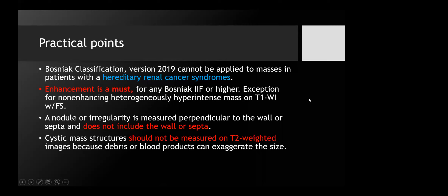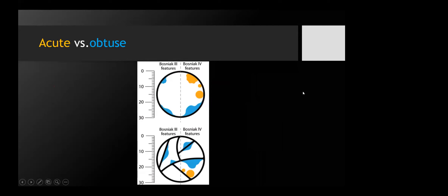Cystic mass structures should not be measured on T2; all measurements should be taken from post-contrast images, because debris and blood products can exaggerate the size. This diagram shows acute versus obtuse margins. The blue lesion with an obtuse angle to the wall is a feature of Bosniak 3, while the nodule with an acute angle is a feature of Bosniak 4.